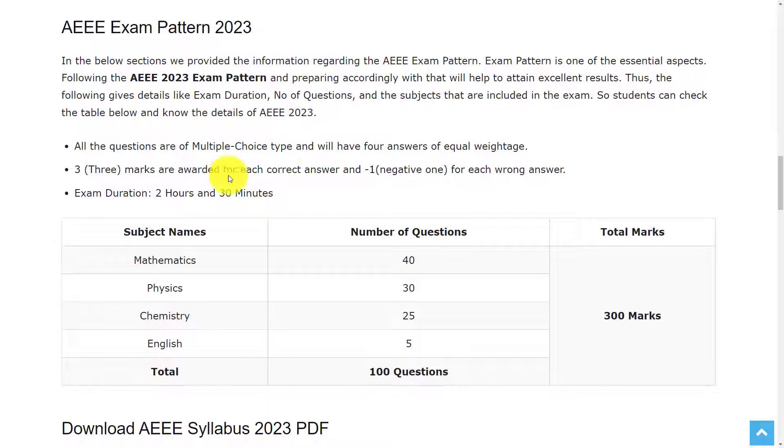Let's see the exam pattern. The questions are of multiple choice type with three marks awarded for each correct answer and one negative mark for each wrong answer. The duration of exam is two hours thirty minutes. There are four subjects in this question paper with a total of 100 questions: 40 questions of Mathematics, 30 questions of Physics, 25 questions of Chemistry, and 5 questions of English - total 100 questions for 300 marks.